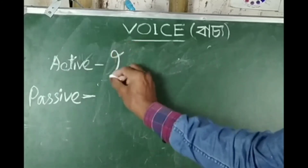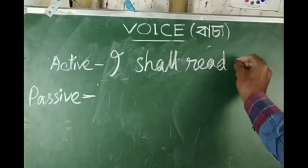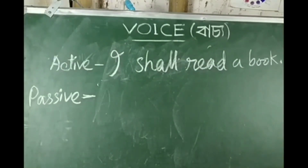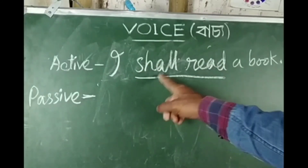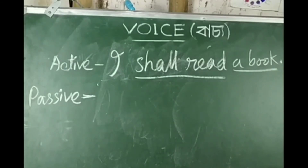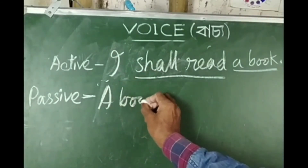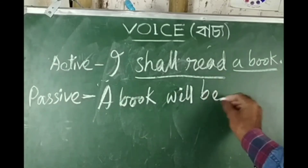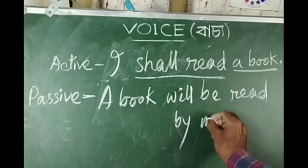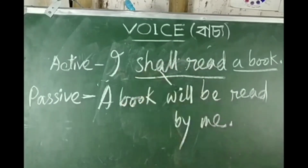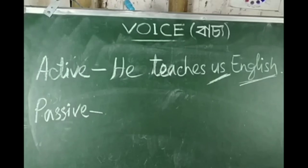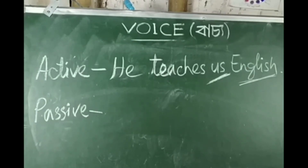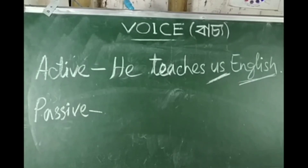For the future tense example: 'I shall read a book.' The object is 'a book', the auxiliary is 'shall', and the subject is 'I'. Converting to passive: 'A book will be read by me.' The future passive uses 'will be' followed by the past participle. So: 'A book will be read by me.'